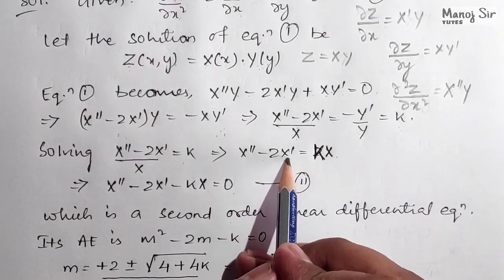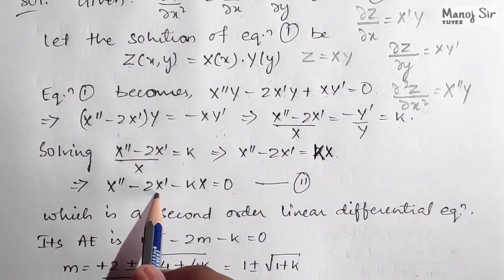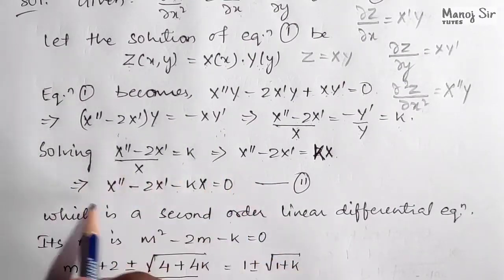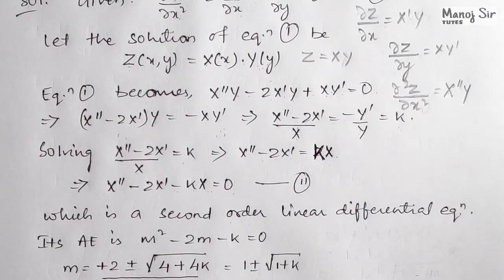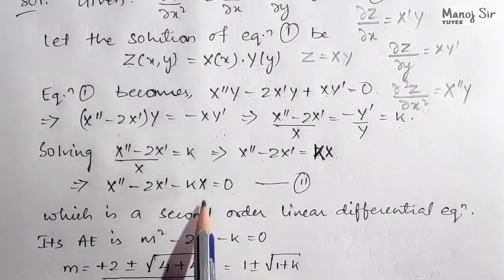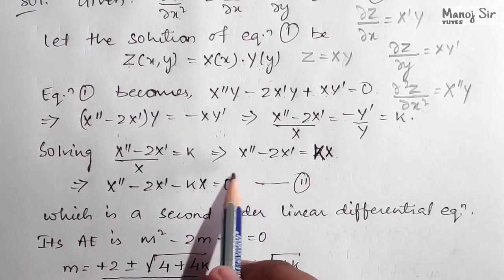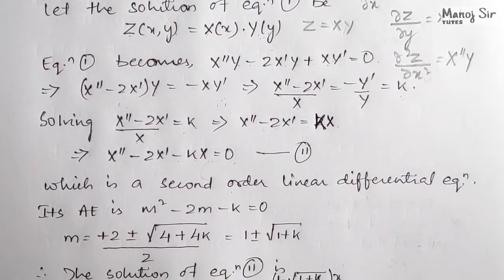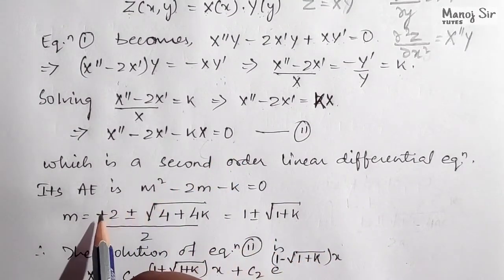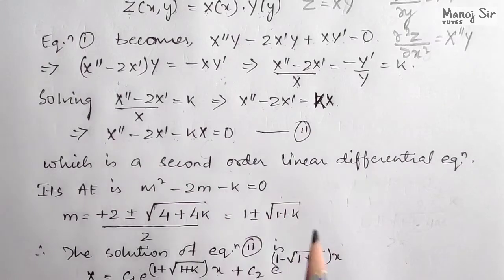Rearranging: X'' minus 2X' minus kX equals zero. This is a second-order linear ODE whose solution is given by complementary function plus particular integral. Since the right-hand side is zero, the particular integral is zero, so we need only the complementary function. The auxiliary equation is m squared minus 2m minus k equals zero.